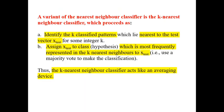Now, you see the classifications. It is known as K nearest neighbor. The K nearest neighbor, we proceed with these two rules. First one is identify the K classified patterns which lies nearest to the test vector. Just identify the elements which are nearer to the test vector. And then assign X test to the class which is most matching. We assign it to that matching class which is most frequently represented in the K nearest neighbors. The K nearest neighbor class acts like an averaging device.